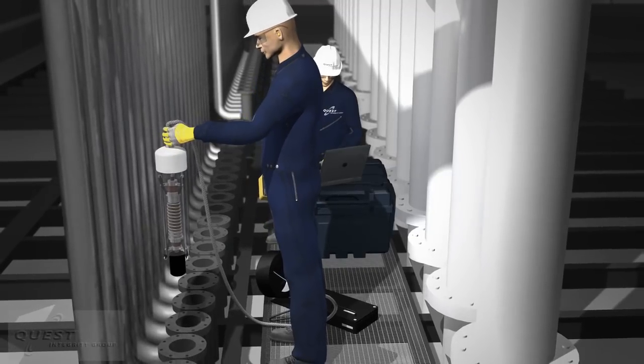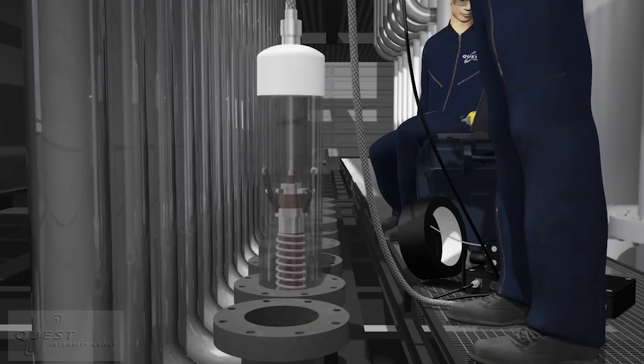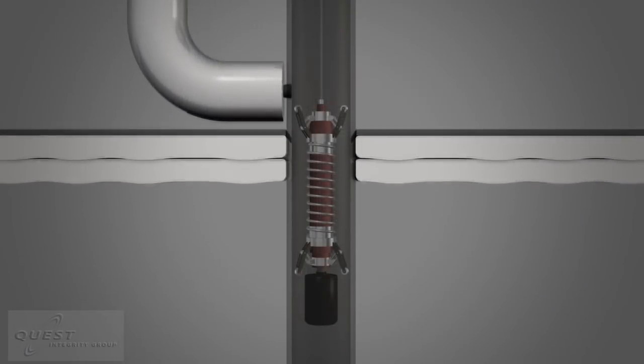The inspection starts from the top of each tube, following catalyst removal. The LOTUS laser probe is inserted into each catalyst tube and driven to the bottom.